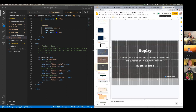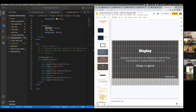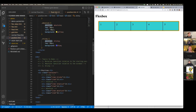Expanding from positioning, we think about display. There are many display values, but today we're only going to talk about two: flex and grid. These are where you start thinking about things in your container and how items relate to each other as a group — all the items in a layout — rather than individually, like we were doing with positioning and floating.